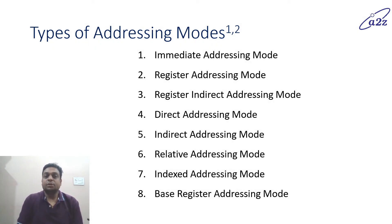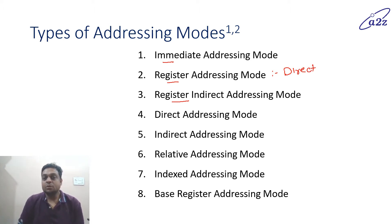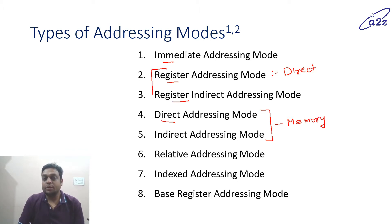Types of addressing modes: here we will discuss eight different addressing modes — immediate, register, and register indirect. Register addressing mode is sometimes called direct addressing mode. So we have register direct, register indirect, direct, and indirect — where direct and indirect belong to memory, while register direct and register indirect belong to register. Then there are relative, indexed, and base addressing modes.